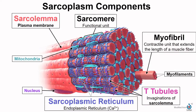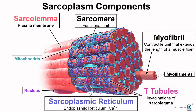Myofibrils extend the length of the muscle fiber and are composed of sarcomeres, which are the functional unit. Here we see one functional unit, and we'd find that this extends through that one myofibril. Multiple sarcomeres make up one myofibril.